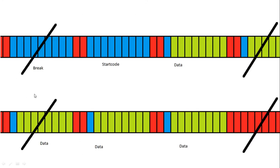Graphically, starting on the left the line is high when idle, then we have our break — a low period of at least 22 bits. Then the mark after break, a high period. Then our start code: a start bit followed by eight low data bits for DMX dimmer data, then two stop bits. Then a start bit and eight-bit data for the first channel, repeating for every channel up to the last, after which it goes high — the idle or mark between packets.